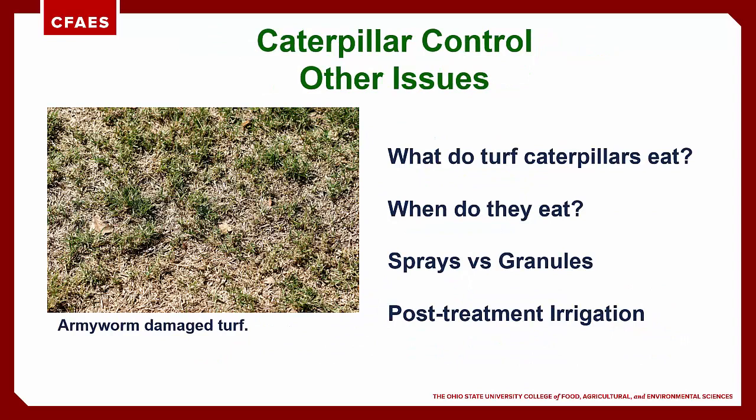What do turf infesting caterpillars eat? The general answer is grass leaf blades — so if you want rapid control, your insecticide needs to be on or in leaf blades. Most of the turf infesting caterpillars feed at dusk, during the night, and early in the morning. This is why sprays always work faster and often better than granules for turf caterpillar control. Consider caterpillar treatments like your fungicide treatments — you want maximum residues on or in the leaves that the caterpillars are going to eat. Therefore, most caterpillar sprays should not be irrigated in after application; only apply irrigation if the label requires it or if you're using a granule that needs to be activated by irrigation.